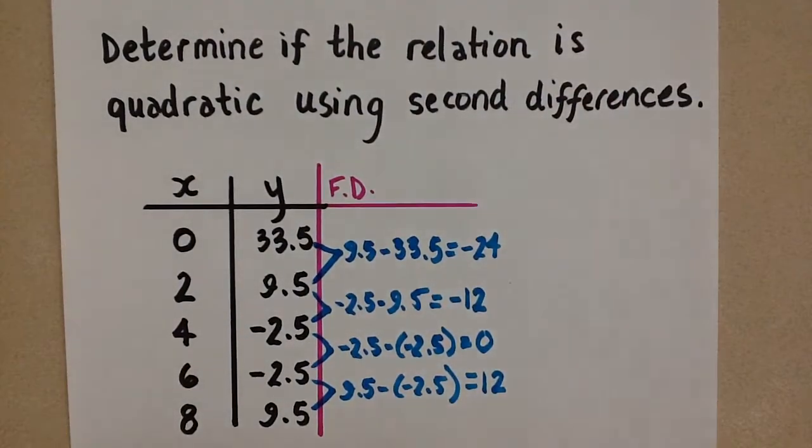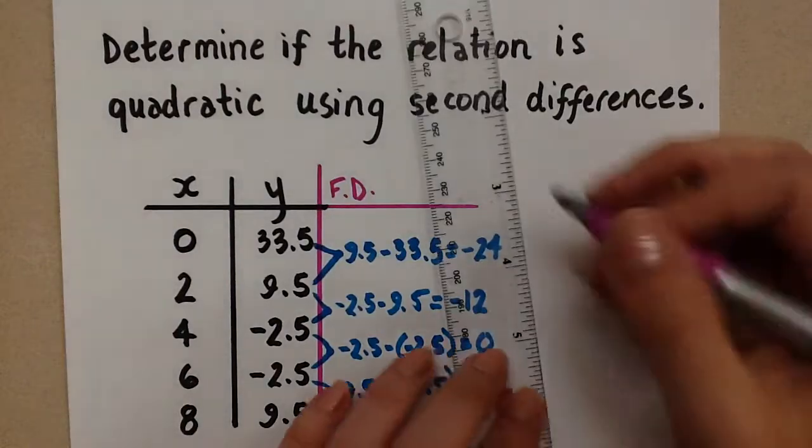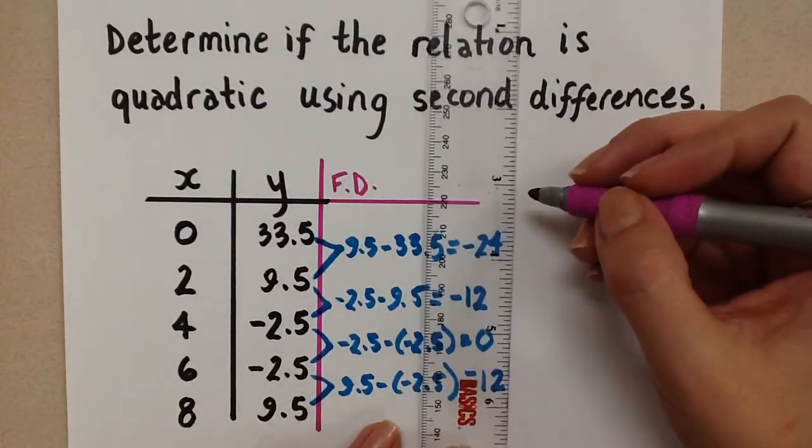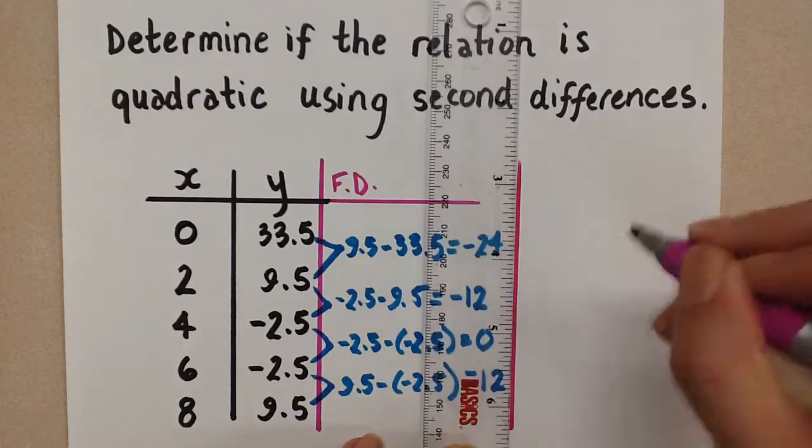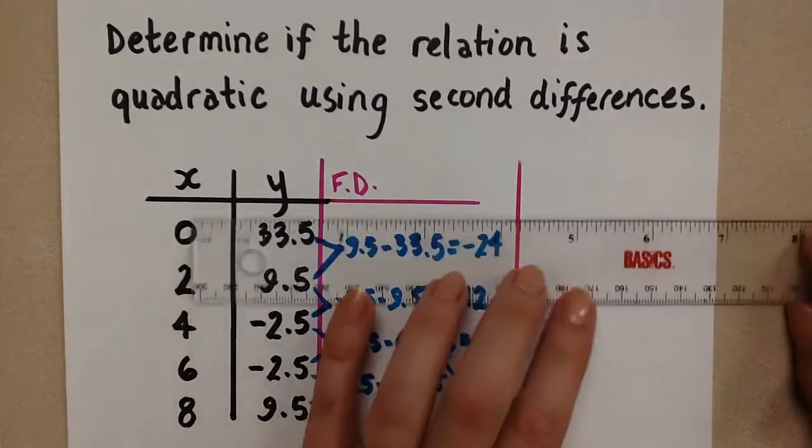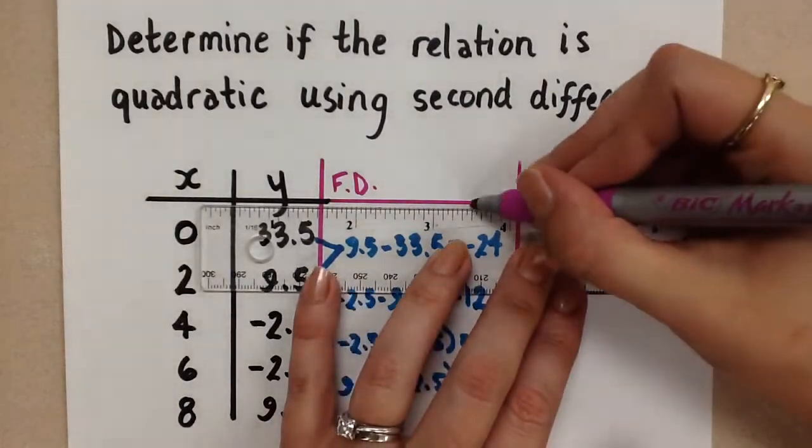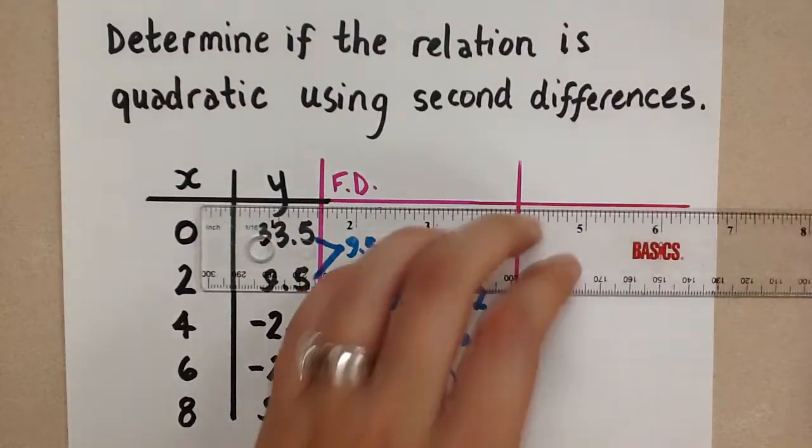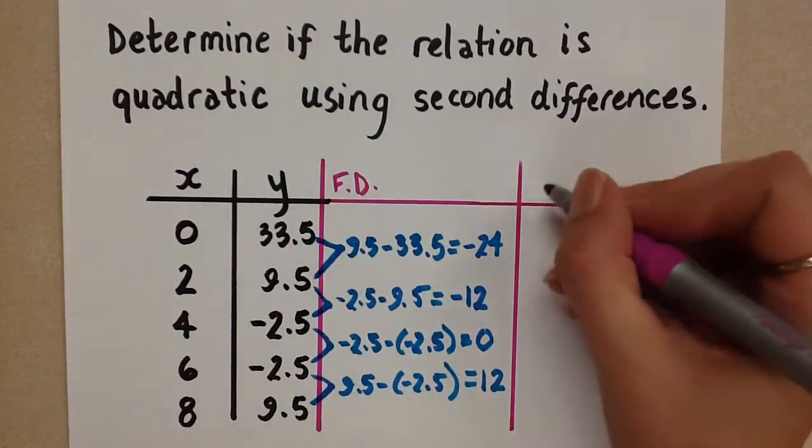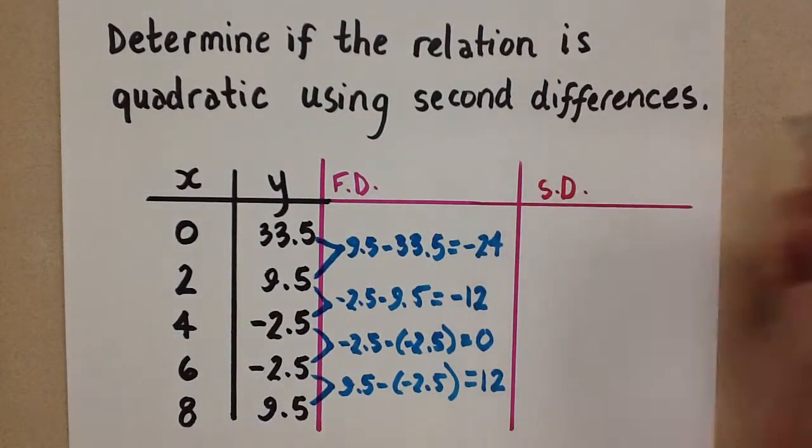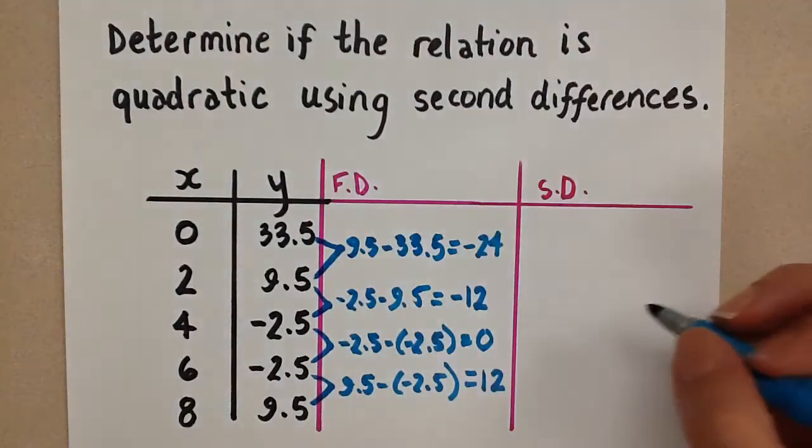So I'm going to add another column here, and I'm going to do second differences. And second differences are just like our first differences. We're going to subtract the values in the previous column once again. So these are our second differences. And we'll subtract them in the same way.